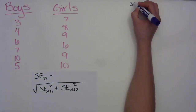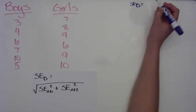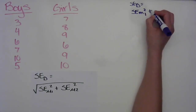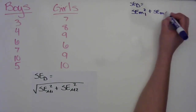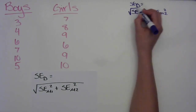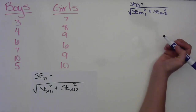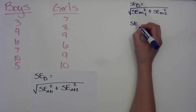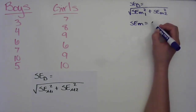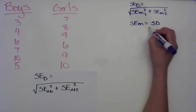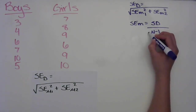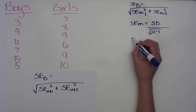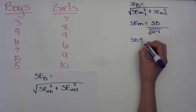The formula for the standard error of the difference is: the standard error of the mean for group one squared, plus the standard error of the mean for group two squared, and then take the square root of all of that. Since the standard error of the mean is not given to us, we also need that formula: standard deviation over the square root of n minus one. We'll be using this version to calculate the standard deviation as well.